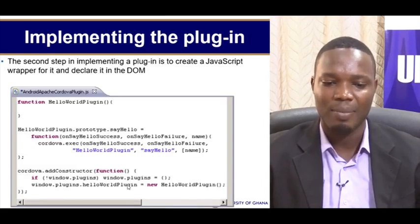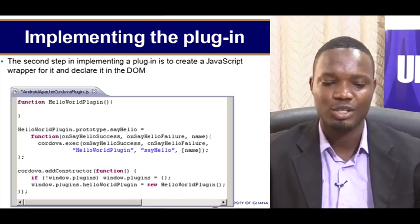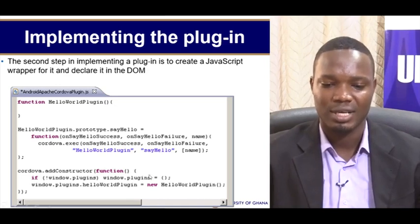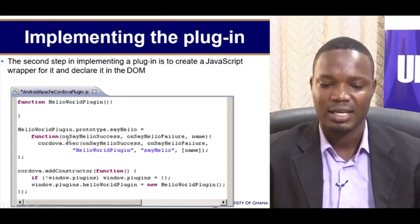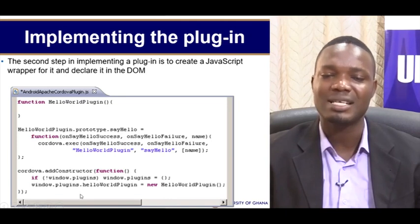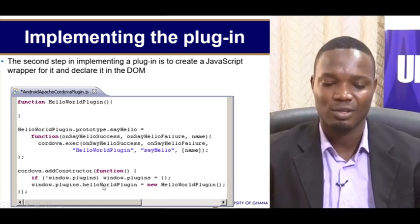In implementing the wrapper, what we need to do is to have a JavaScript file. In the JavaScript file we need to make some declarations. Here we can see for our HelloWorld plugin that we are creating, we are now having the say hello method function being implemented. We are going to do something similar for your class, and if you are familiar with JavaScript you should be able to understand the syntax and follow suit.